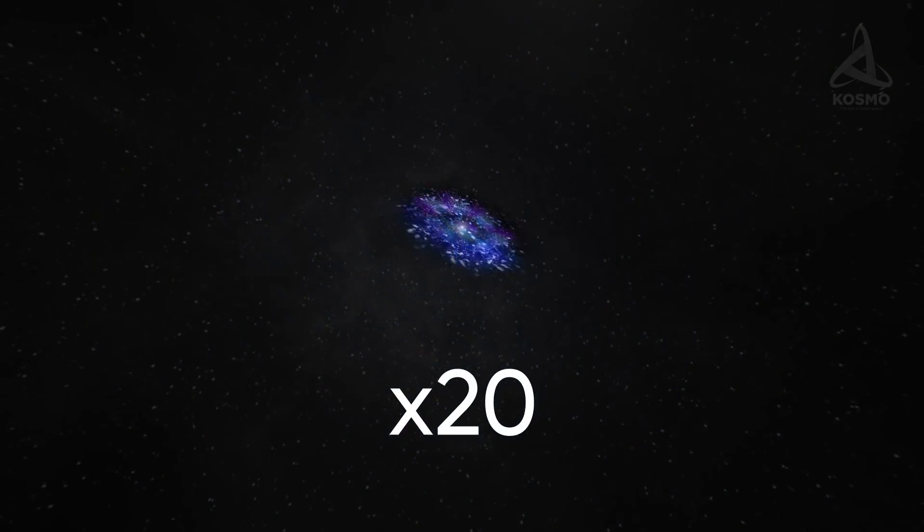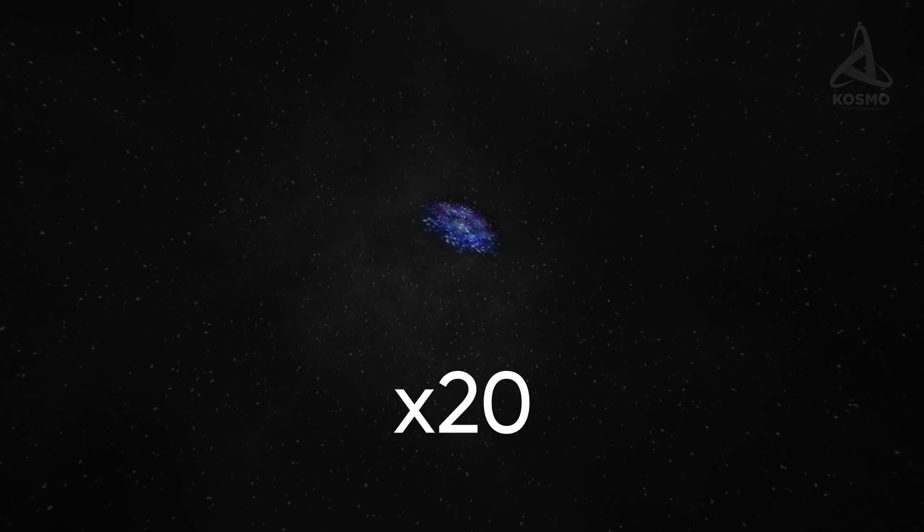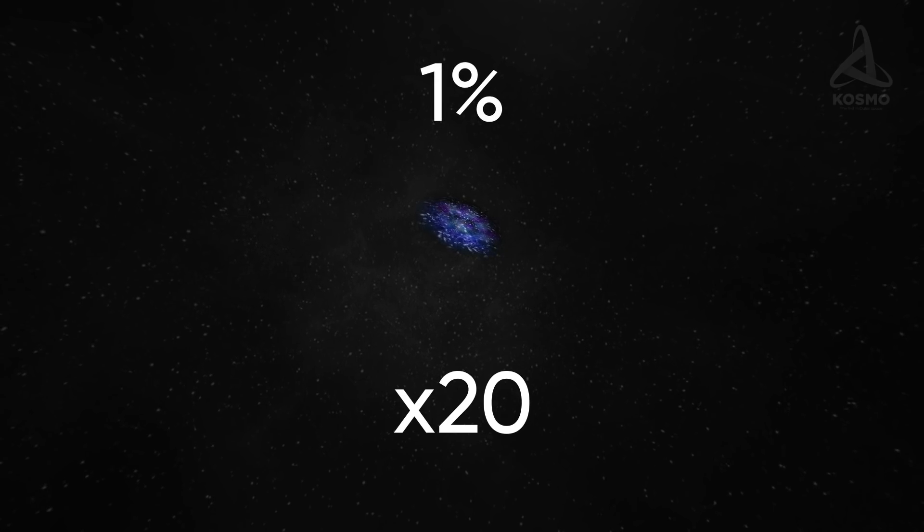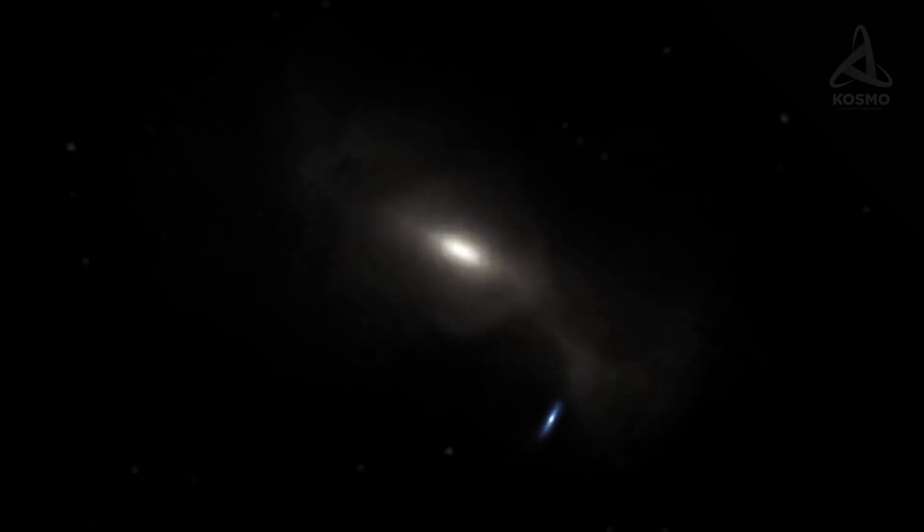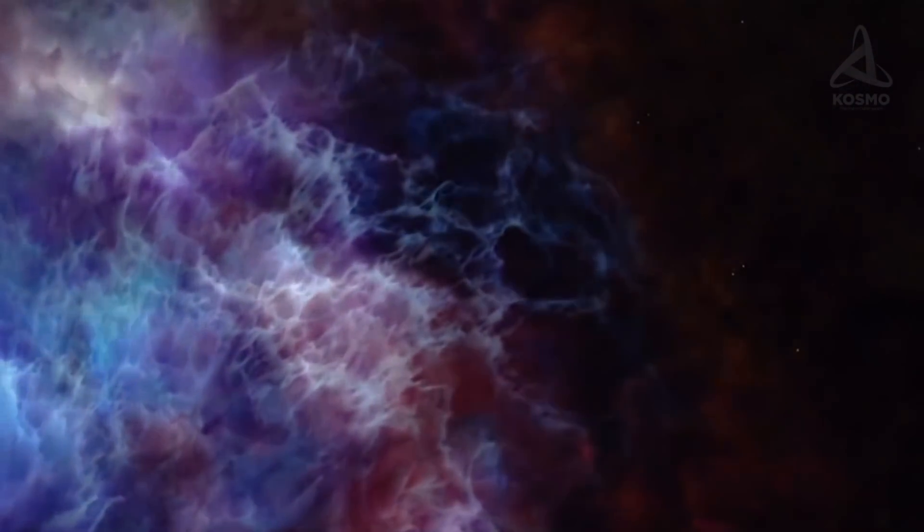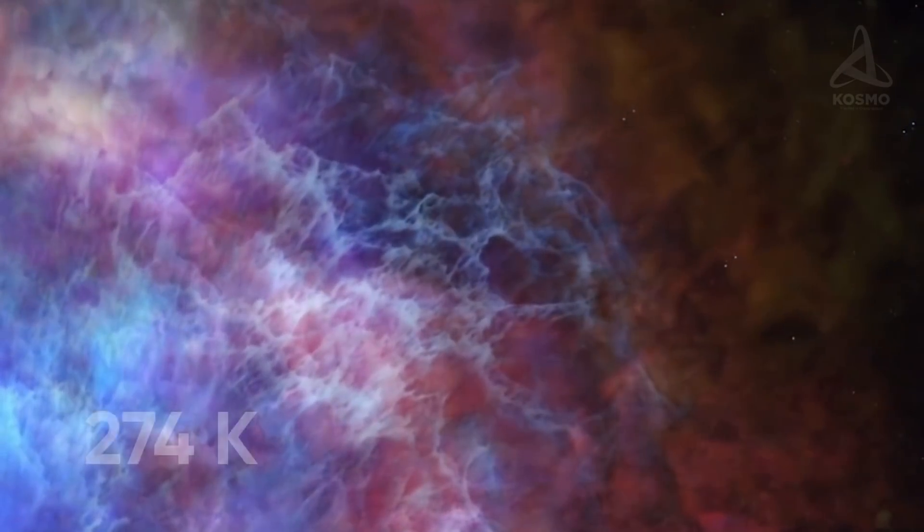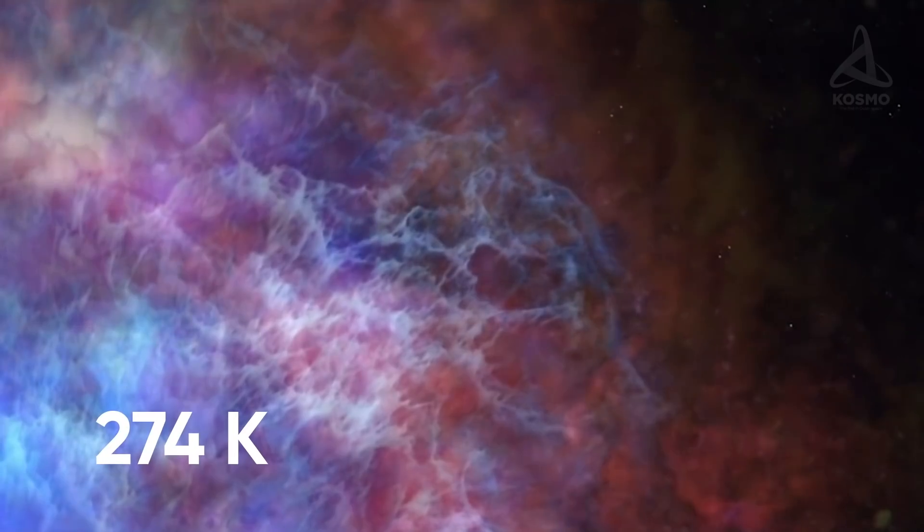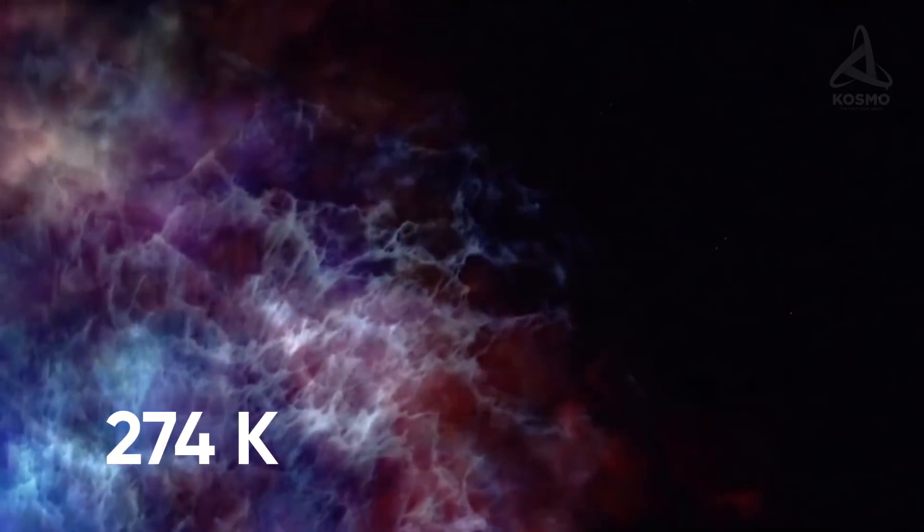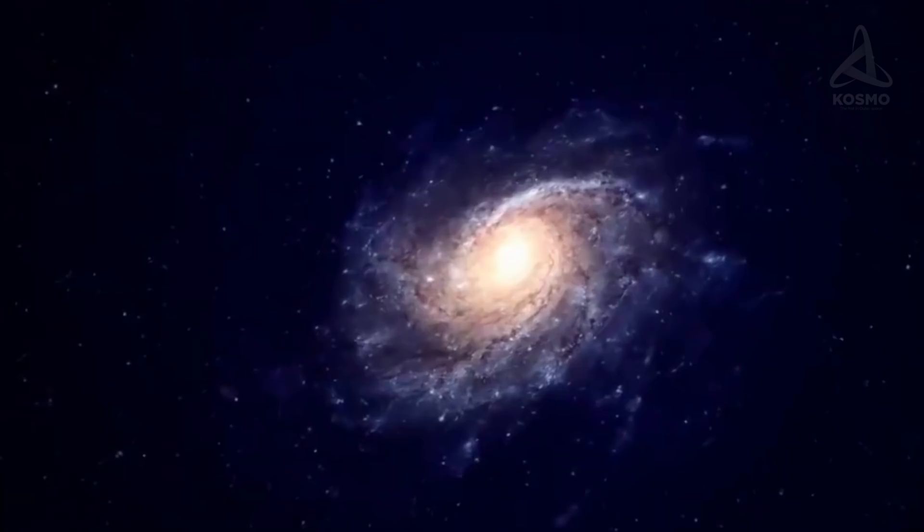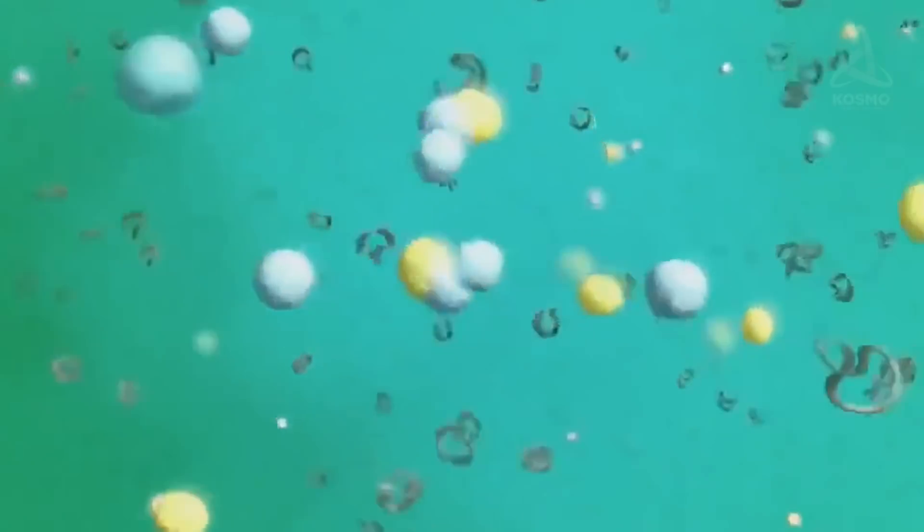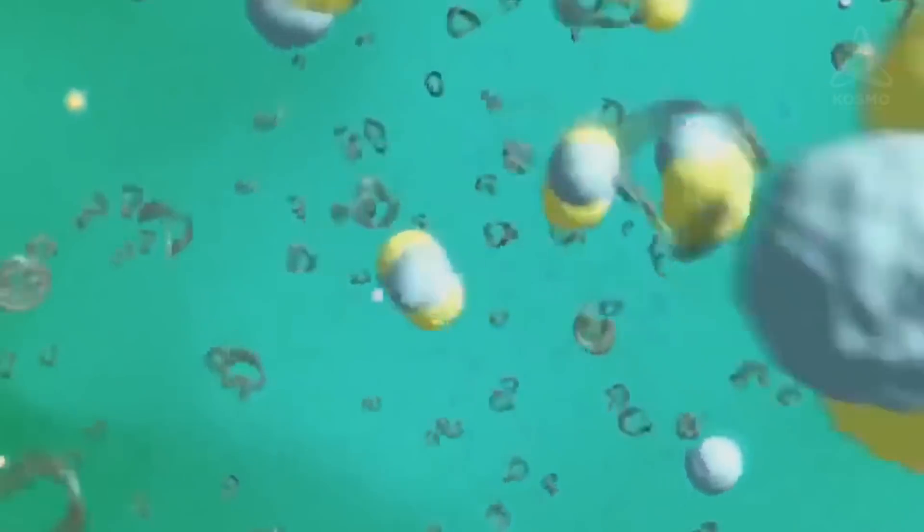When the universe contracts 20 times more, its volume will account for just 1% of that of today's, and all galaxies will blend into one. The relic radiation temperature by that time will measure 274 degrees Kelvin, and it will still continue to grow. This means that there won't be any liquid water left in the universe, and water is vital for biological life as we know it.